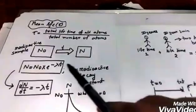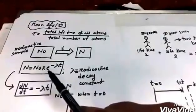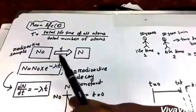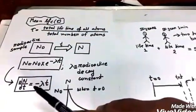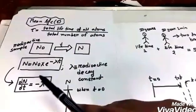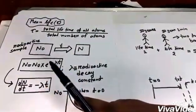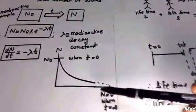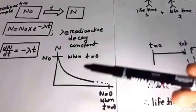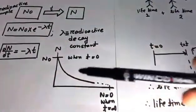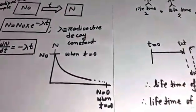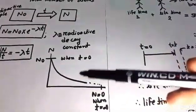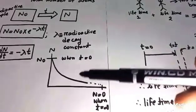Actually, we get this formula by integrating the differential formula of radioactive decay. That is our graph telling us about the equation. We all know radioactivity is a first-order reaction. That is why the total number of atoms will be decayed when the time is infinite.